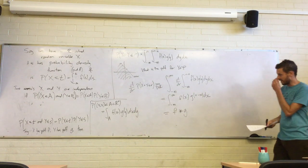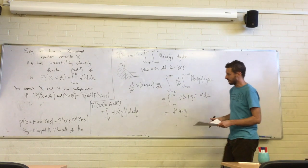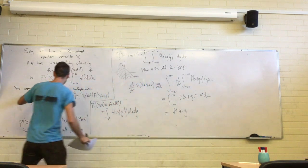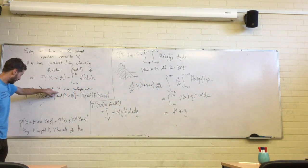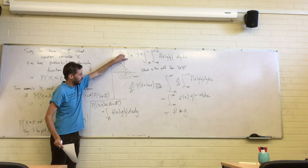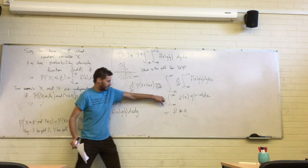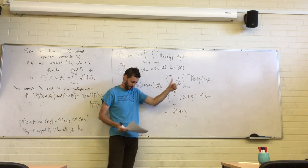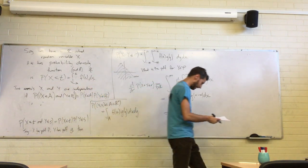So what did we learn? If you've got two independent random variables, then the PDF of their sum is just the convolution of the PDFs of the two individual random variables.